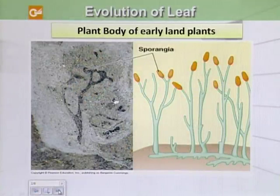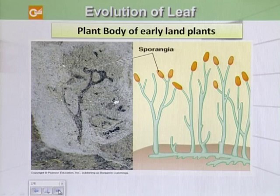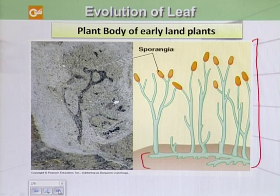As we know, the early plants were rootless and leafless. As we can see here, this is the diagram of Cooksonia, and they do not have true roots — they have stem-like leaves.